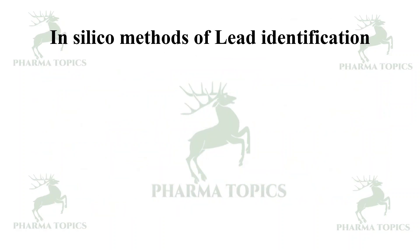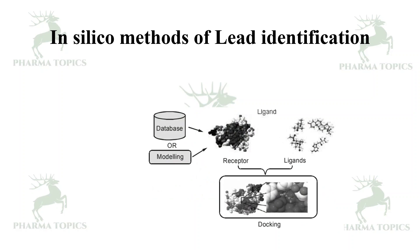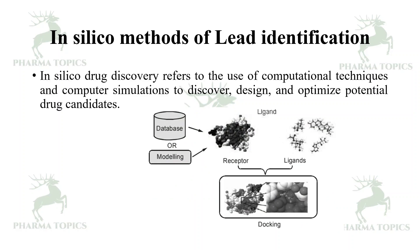In summary, in silico methods of lead identification use computational techniques and simulations to discover, design, and optimize potential drug candidates. This has been a brief overview of in silico methods for lead identification. I hope it will be useful for you. Thank you for listening. Happy learning. Kindly share this with your friends, subscribe to the PAMATOPICS channel, go through all the series presented in the channel, and score well in your exams.